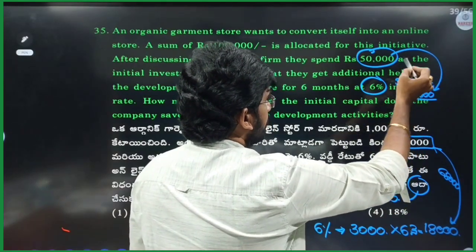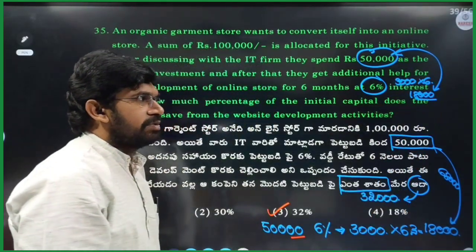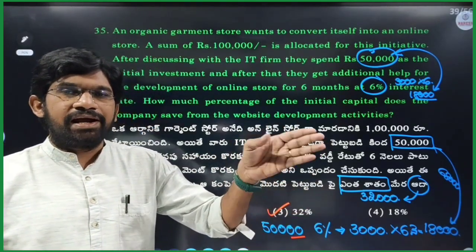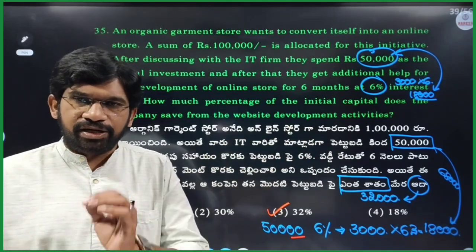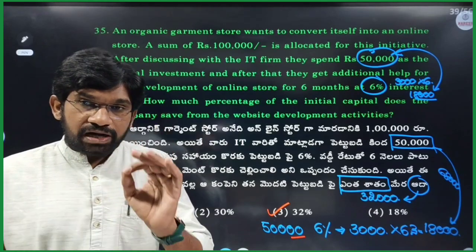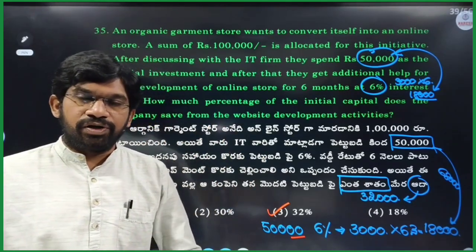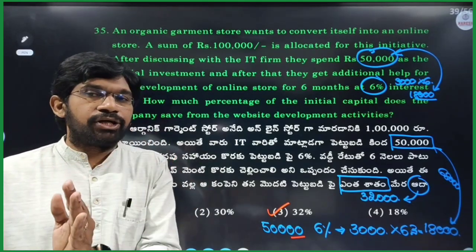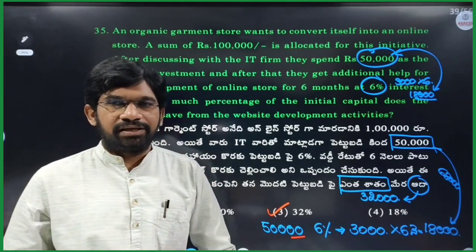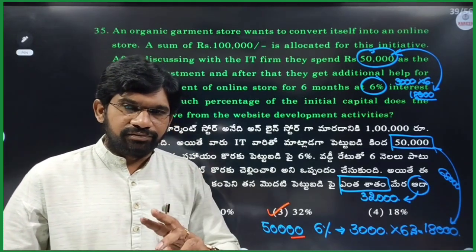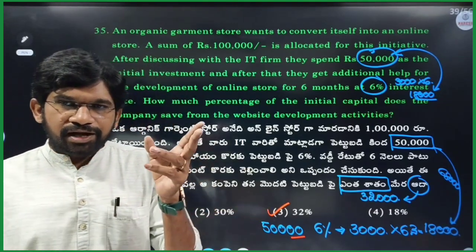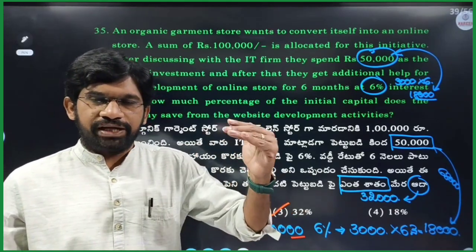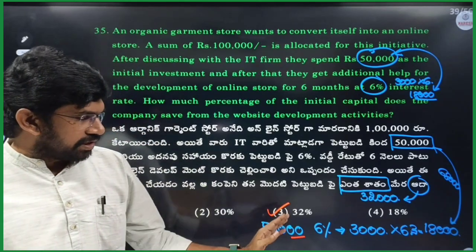The interest calculation gives 3,000, making the total cost 68,000. The savings from the 1 lakh budget is 32,000. So 32,000 out of 1,00,000 is 32%.